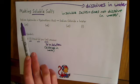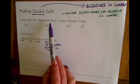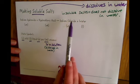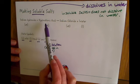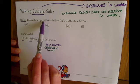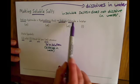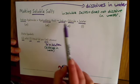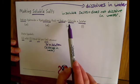Let's have a look at this equation: sodium hydroxide plus hydrochloric acid makes sodium chloride plus water. Hydrochloric acids make chlorides, so we make sodium chloride plus water. We need to work out whether sodium chloride is soluble or not, and if it is soluble, how would we separate it?